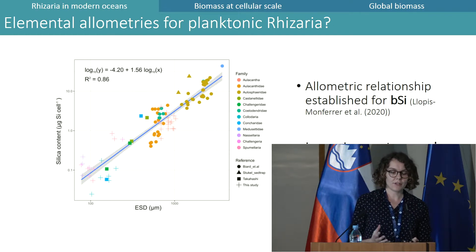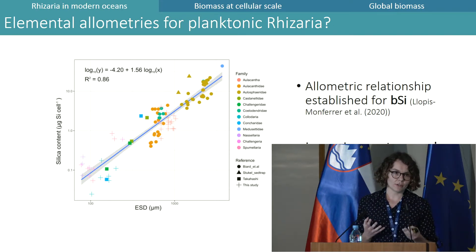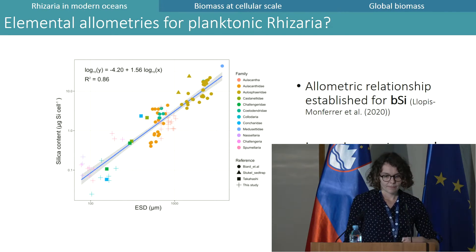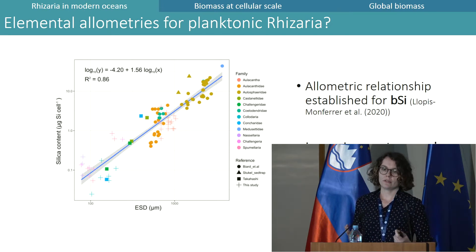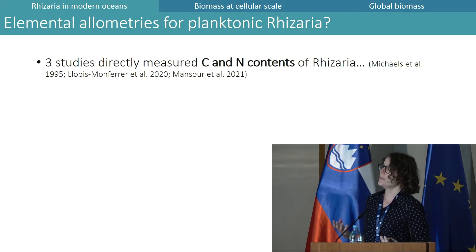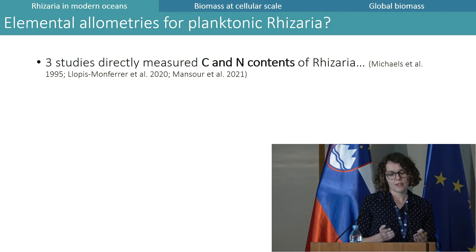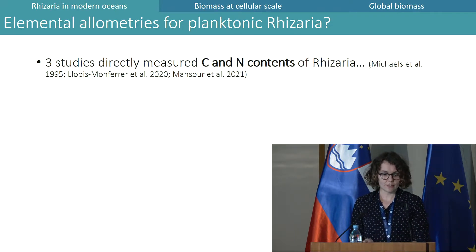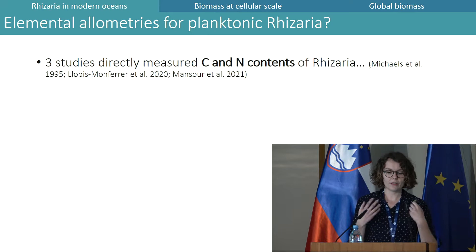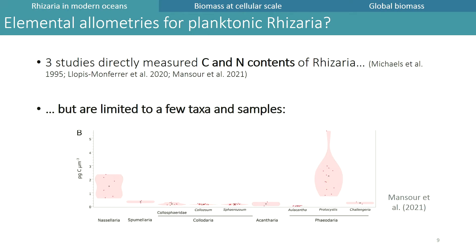In that paper, Rhizaria are absent, and these relationships are believed to overestimate the carbon biomass of large protists. Conversely, an allometric relationship linking biogenic silica content to size was established for Rhizaria and covers a large size spectrum and multiple taxa. As for carbon, up to now only three studies have directly measured the carbon and nitrogen contents of Rhizaria, limited to a few taxa and samples. We still do not have an accurate and simple way to estimate biomass at a larger scale.